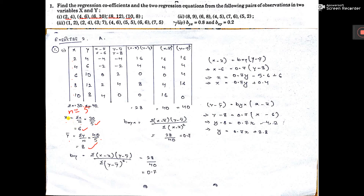Now since x̄ and ȳ are not fractions, you can use this formula. If it is a fraction, then the last formula you have to use. I have given the formula — the last formula you have to use if x̄ and ȳ are fractions. To use this formula you need to find (y minus ȳ), (x minus x̄), (x minus x̄) into (y minus ȳ), (x minus x̄) whole square, and (y minus ȳ) whole square.